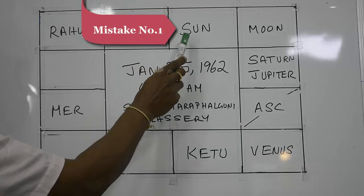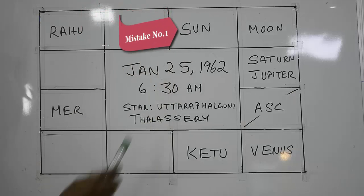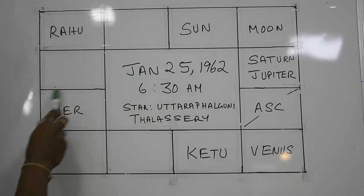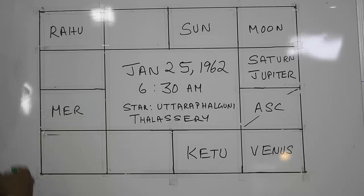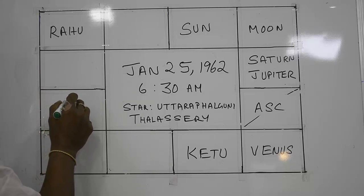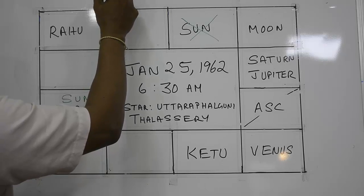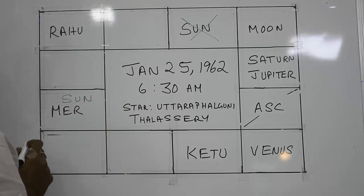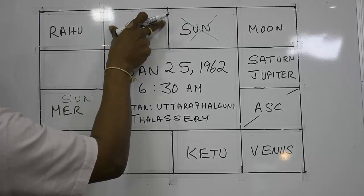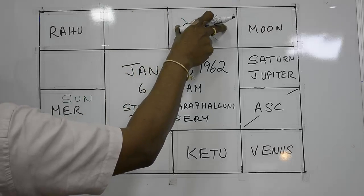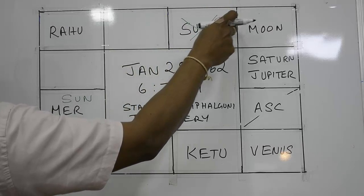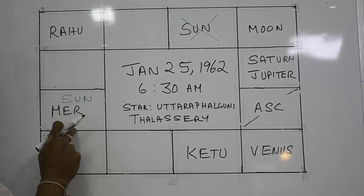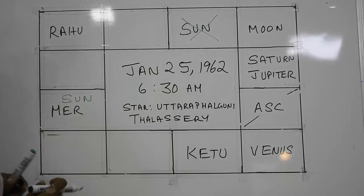Mistake number one is the sun. Between mid-January and mid-February the sun can only be in one place — so you have to write the sun here. This is 0 degrees and the sun enters this place in mid-April and stays for a month. So mid-May to mid-June is the next sign, and so on. Since the date of birth is January 25th, the sun must always be in this sign between mid-Jan and mid-Feb.